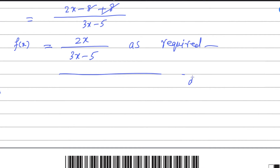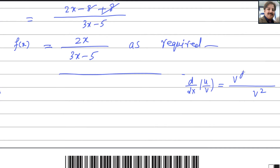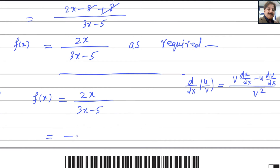The quotient rule for a function in U over V form states: write the square of the denominator, then denominator times derivative of numerator, minus numerator times derivative of denominator. We apply this quotient rule to differentiate f of x equals 2x over 3x minus 5, since it is a fraction.